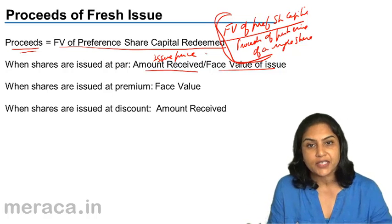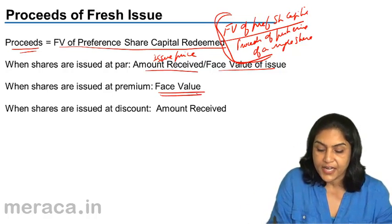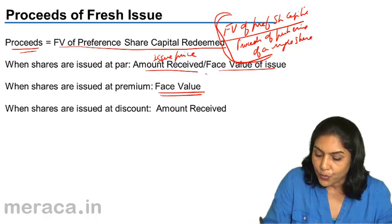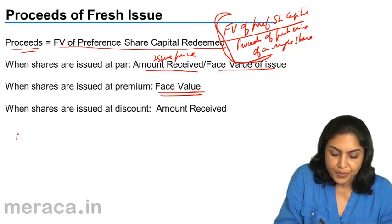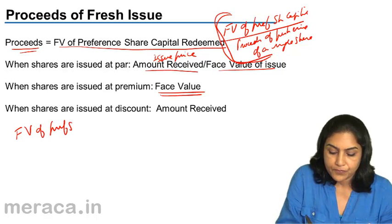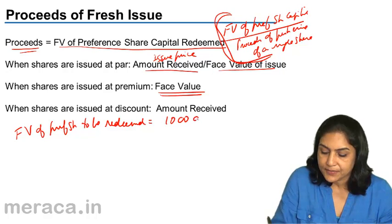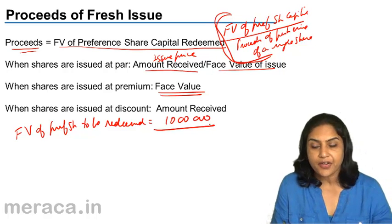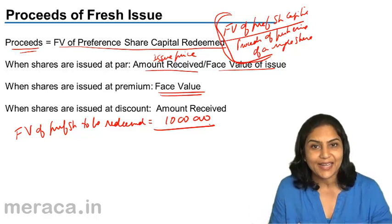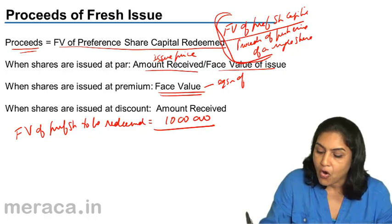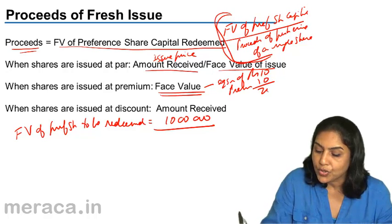But when the shares are issued at a premium, we take the face value. For example, let us take a case where the face value of preference shares to be redeemed is equal to 10 lakhs, and new shares of rupees 10 each are being issued for rupees 20, at a premium of rupees 10. So we have an equity share of rupees 10 being issued at a premium of rupees 10, total price rupees 20.